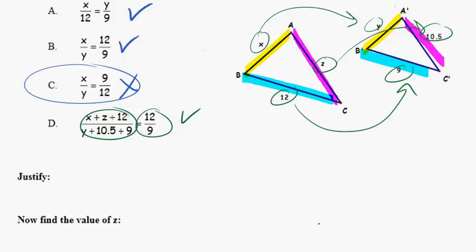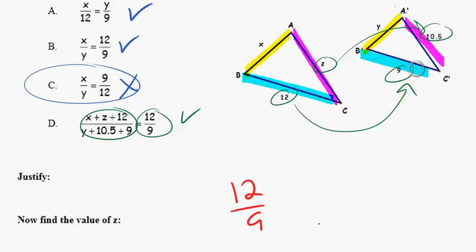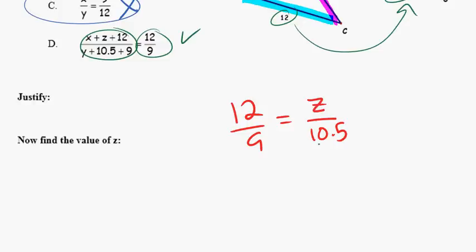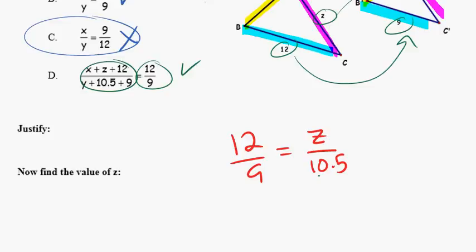The next part is to find the value of z. We've already established that corresponding sides of these two similar triangles have a ratio of 12 to 9. Big turquoise over small turquoise must equal big purple over small purple. Using the means-extremes product theorem, we know that 12 times 10.5 equals 9 times z. 12 times 10.5 is 126, so 126 equals 9z. Dividing each side by 9, we get z equals 14.